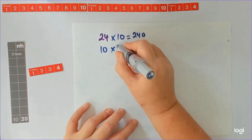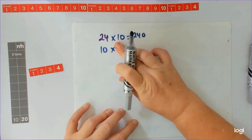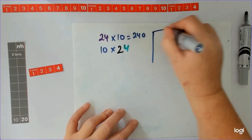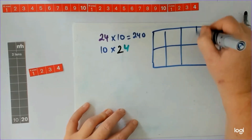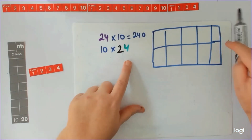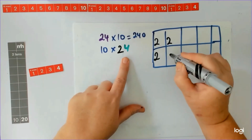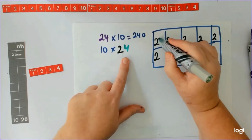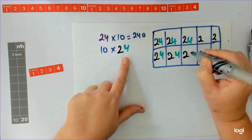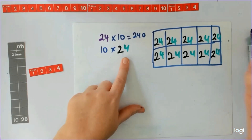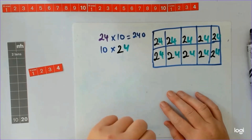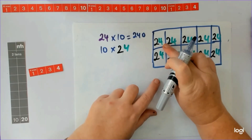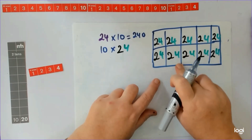I then said: what does 10 groups of 24 look like? I drew a 10-frame and said, okay, we've got 24 — I'm just going to do this quickly — so that's the 20 and that's the four. So I've got 10 groups of size 24. I didn't want students thinking 24 plus 24 plus 24 plus 24; that's too hard.